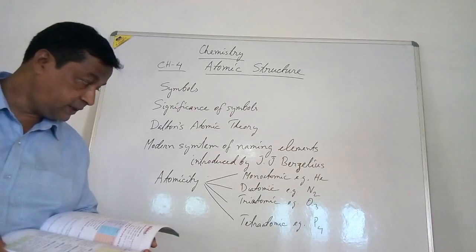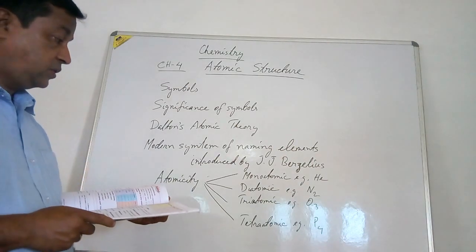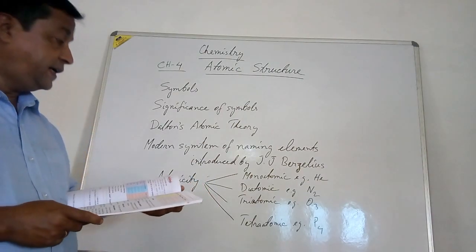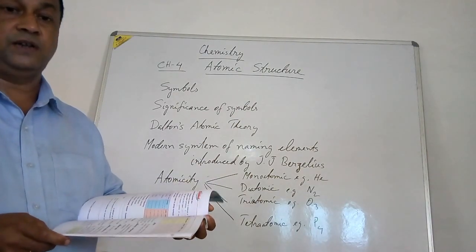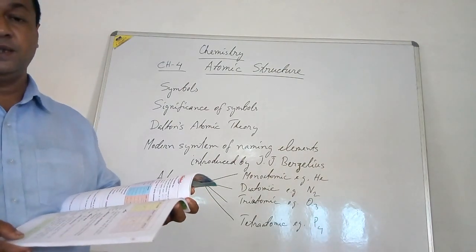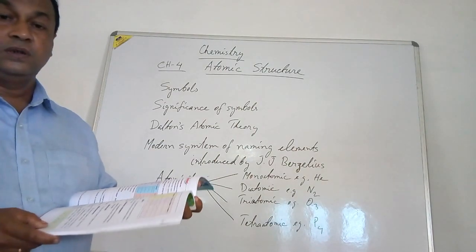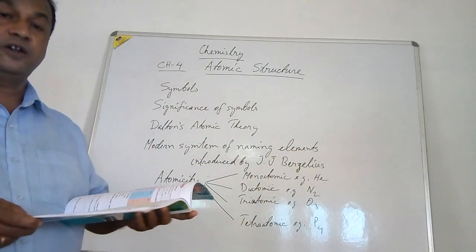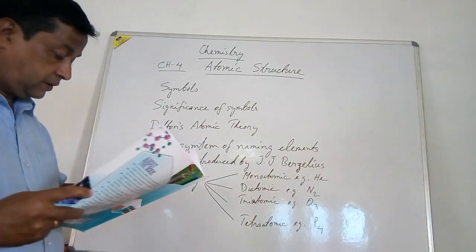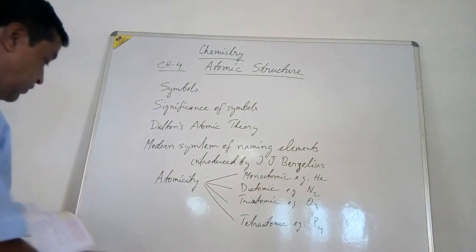There are also other molecules — for example, sulfur has eight atoms in one molecule. Any molecule containing more than one atom, other than monoatomic, is generally referred to as polyatomic. Now, the next topic is the periodic table.